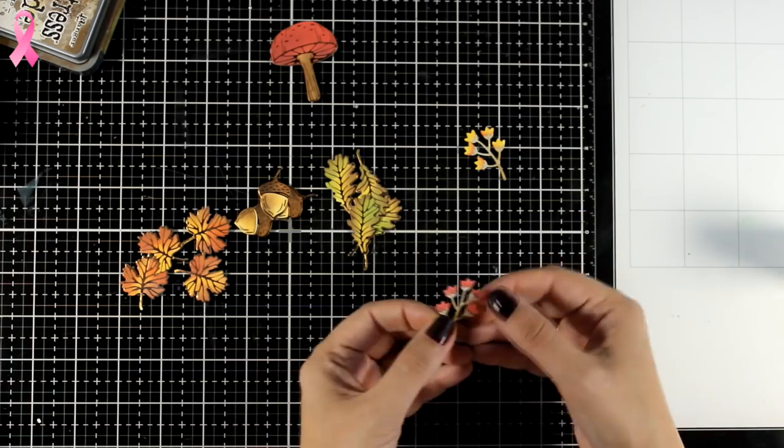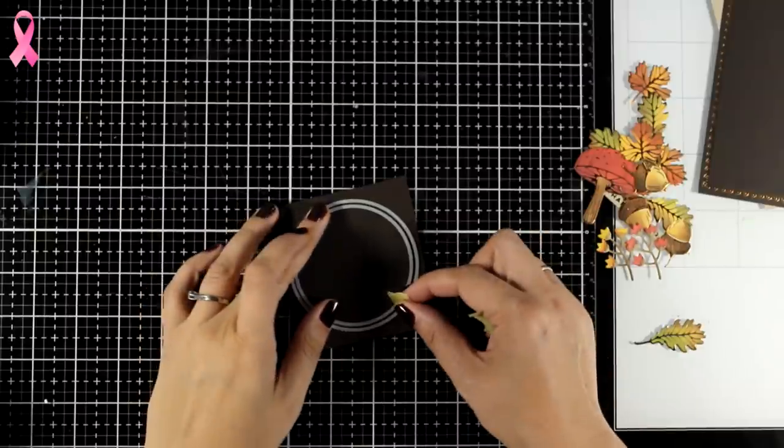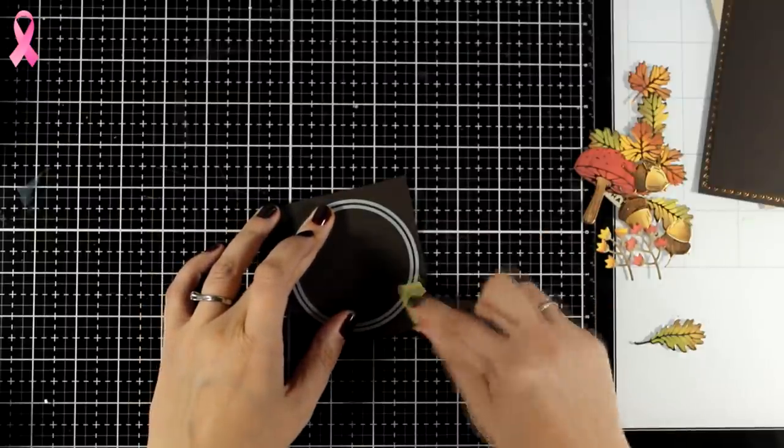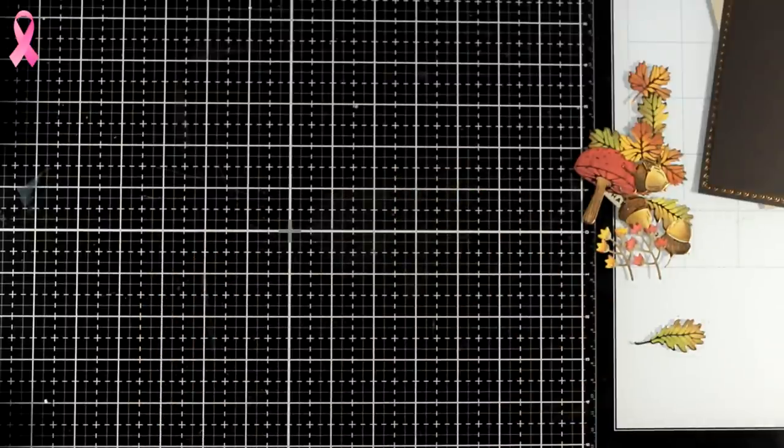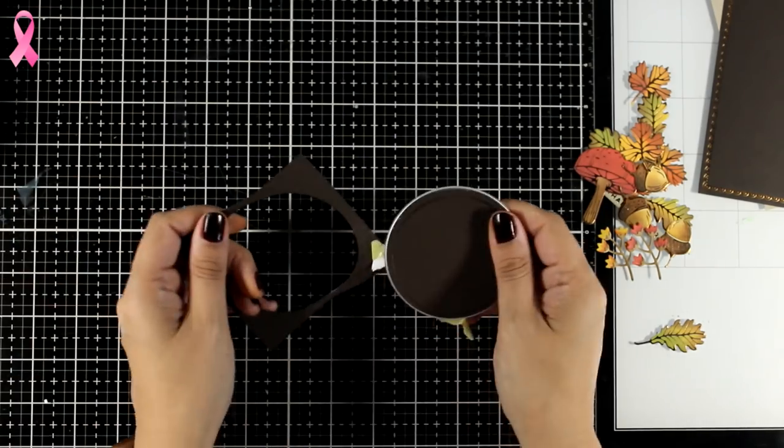And now since I want to create a wreath, to make it easier on me I created a ring out of a brown cardstock. I just used two circle dies, one inside the other. This is not going to show at all. It's just a guide, like a template for me, on where I'm going to stick my leaves.